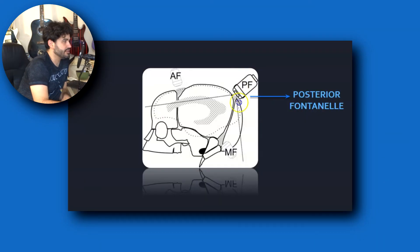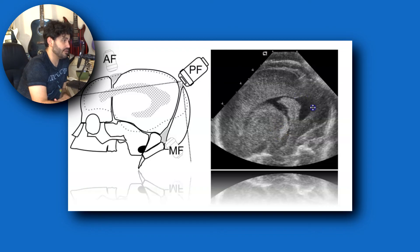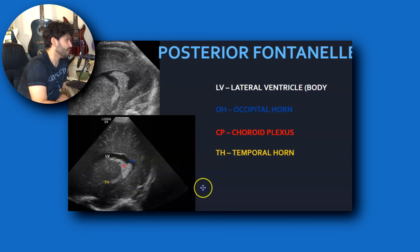Now the posterior fontanelle. The previous images were all from the anterior fontanelle in sagittal and coronal. From the posterior fontanelle you can get sagittal images of the right and left lateral ventricles to show the choroid plexus and to check for blood accumulating in the occipital horn. In a bigger baby the occipital horn won't be as obvious — the younger the baby, the more obvious it will be. You can see the lateral ventricle, the temporal horn, and the choroid plexus.